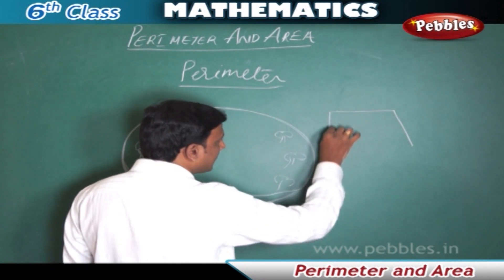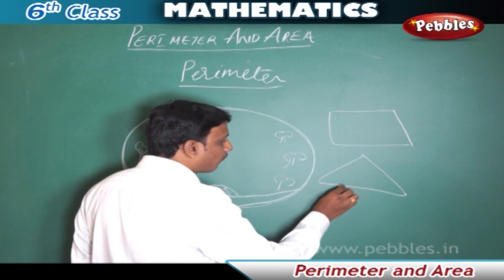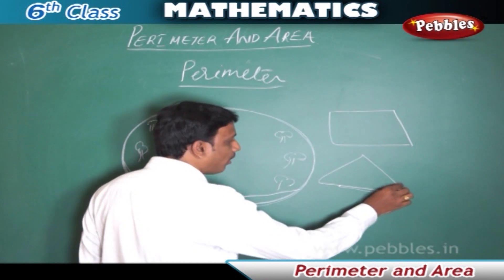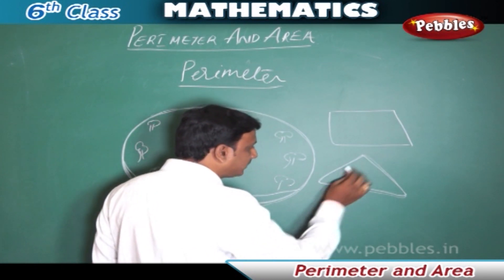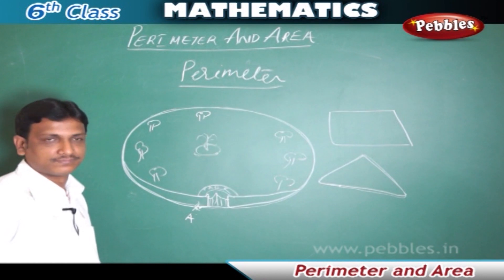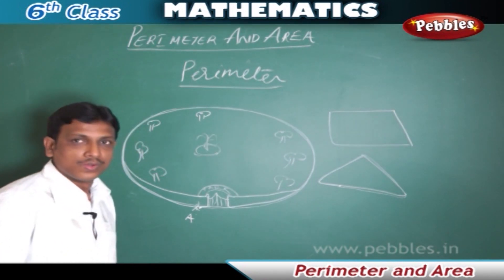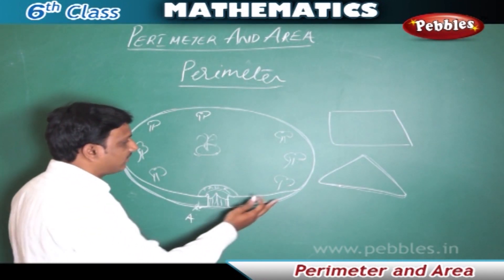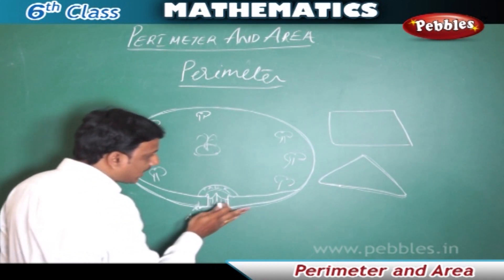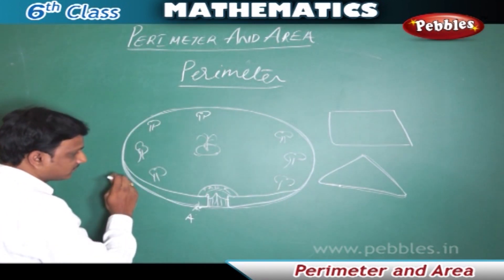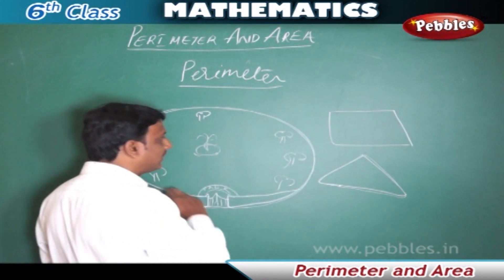This can be a circular path, a rectangular shape, or a triangular shape — whatever the shape may be. Starting at one point and traveling along its boundary back to the same point, the distance covered throughout this travel is called the perimeter of that closed figure. The perimeter is the distance traveled along the boundary of a closed figure one time.